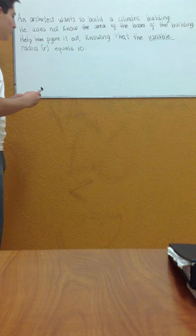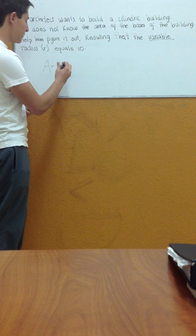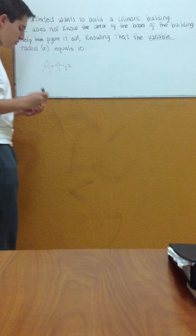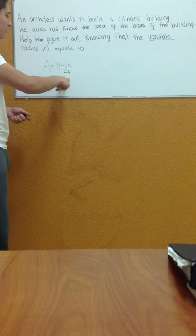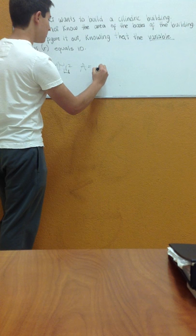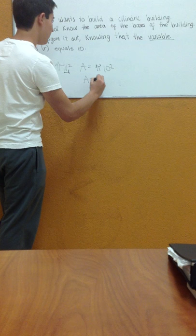First of all, you need to know the equation to get a circular area, which is pi times radius squared. And if we substitute this variable using this value, it would be the area equals pi times 10 squared, which is pi times 100.